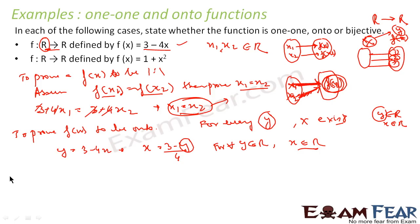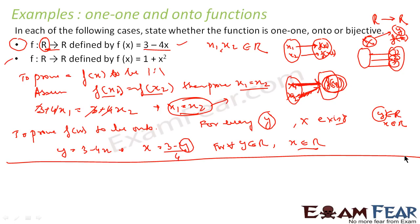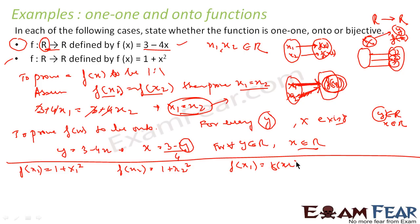Let us take the second example: f(x) = 1 + x². So f(x1) = 1 + x1² and f(x2) = 1 + x2². We assume f(x1) = f(x2) to check for one-to-one. That gives 1 + x1² = 1 + x2². The 1s cancel, so x1² = x2², which means x1 = ±x2.